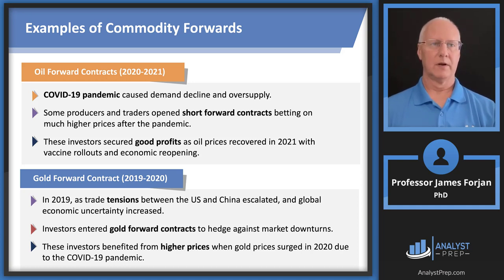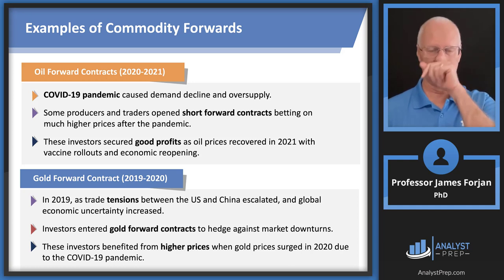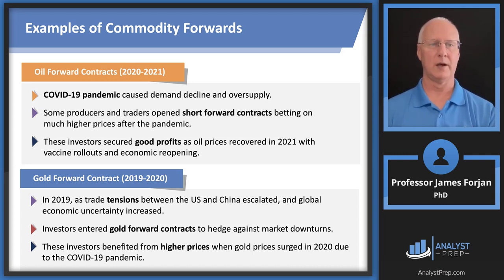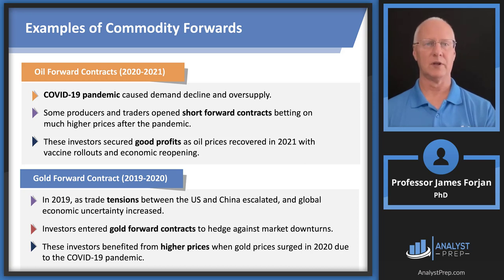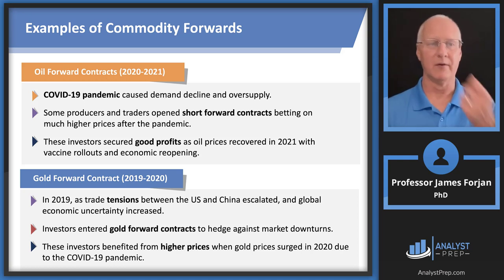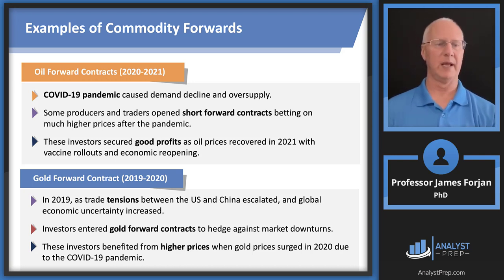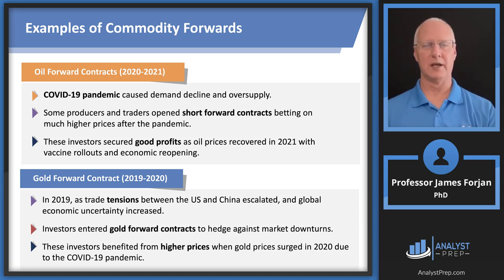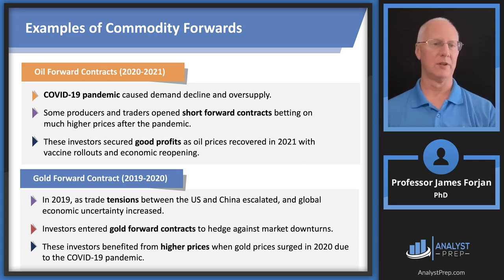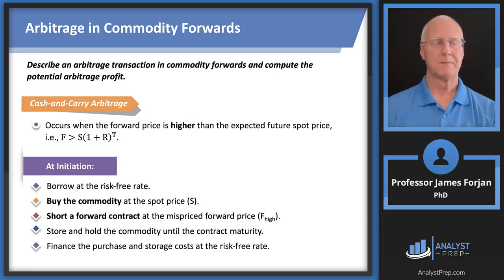The chapter walks through specific examples. COVID caused demand decline and oversupply because we weren't driving or buying, so short forward contracts made good money. Gold forward contracts were affected by US-China trade escalations, and gold prices surged likely due to COVID. These are the kinds of examples that, since they're in the chapter, are fair game for the exam.